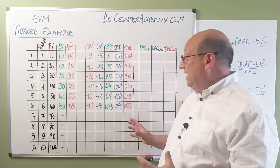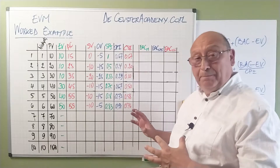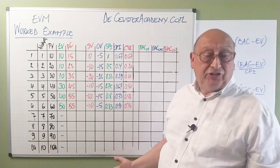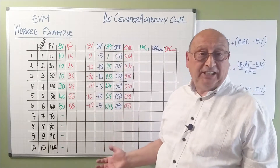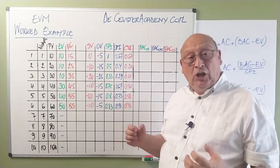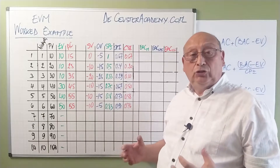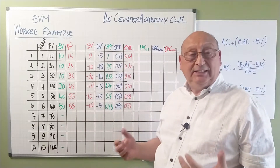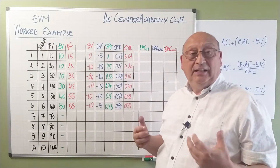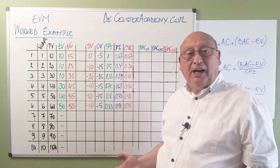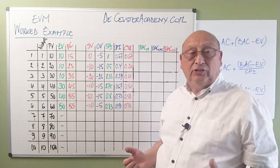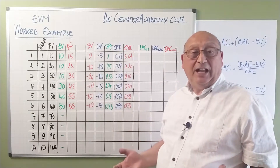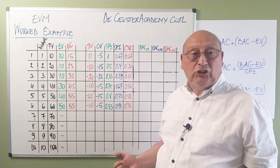Here we have the information that we built in the previous stages of this exercise. What we are now going to do is to use the CPI, the CSI, and the SPI to calculate the expected value at completion.